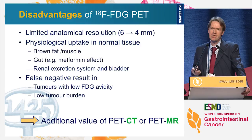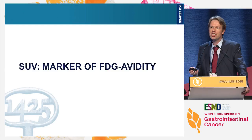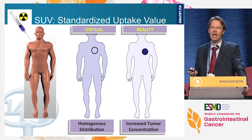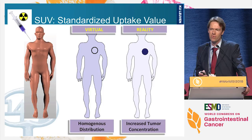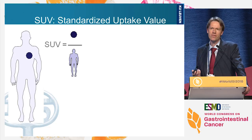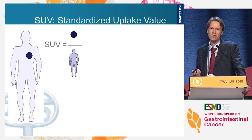Many clinical trial data look at SUV, a quantitative metric of FDG avidity. To understand it intuitively: if a tracer is homogeneously distributed in the entire body with no excretion, we have a certain virtual concentration. In reality we have higher accumulation in the tumor and less in the rest of the body. The SUV is the ratio between the concentration seen in the tumor and this virtual homogeneous distribution — it tells you how preferentially the tracer accumulates in the tumor.